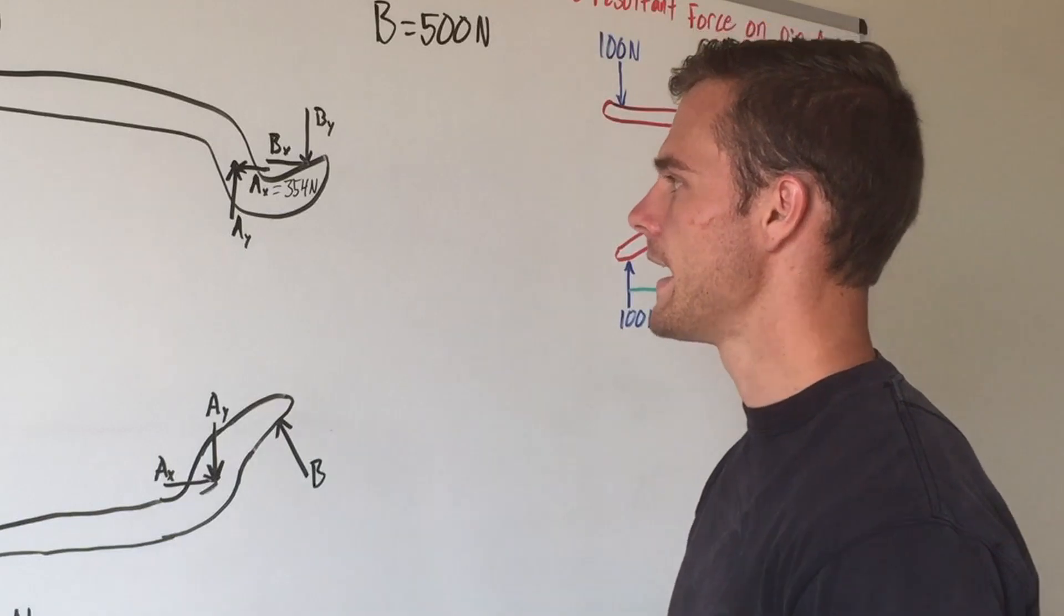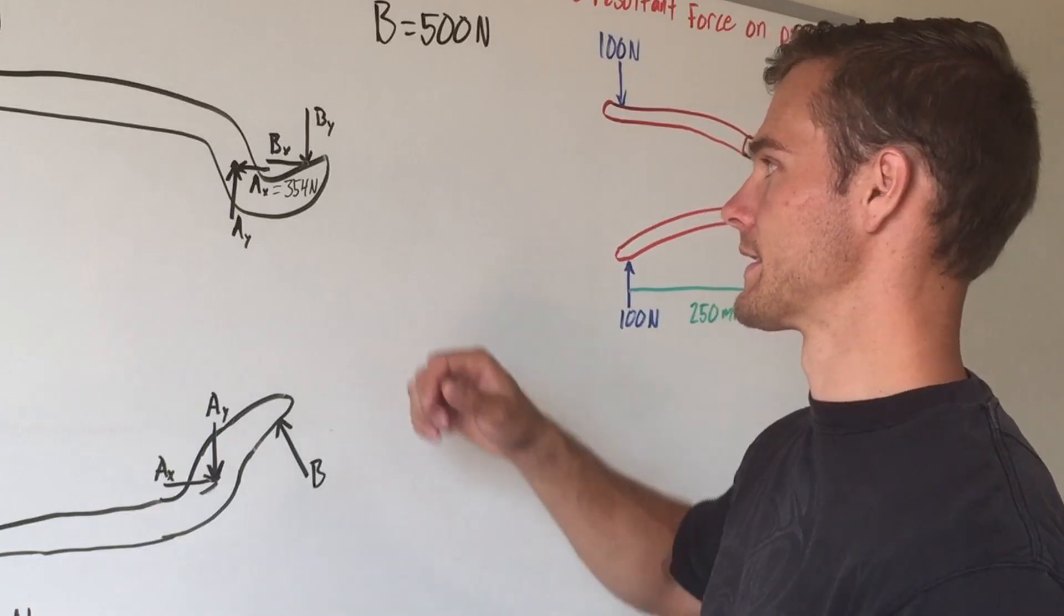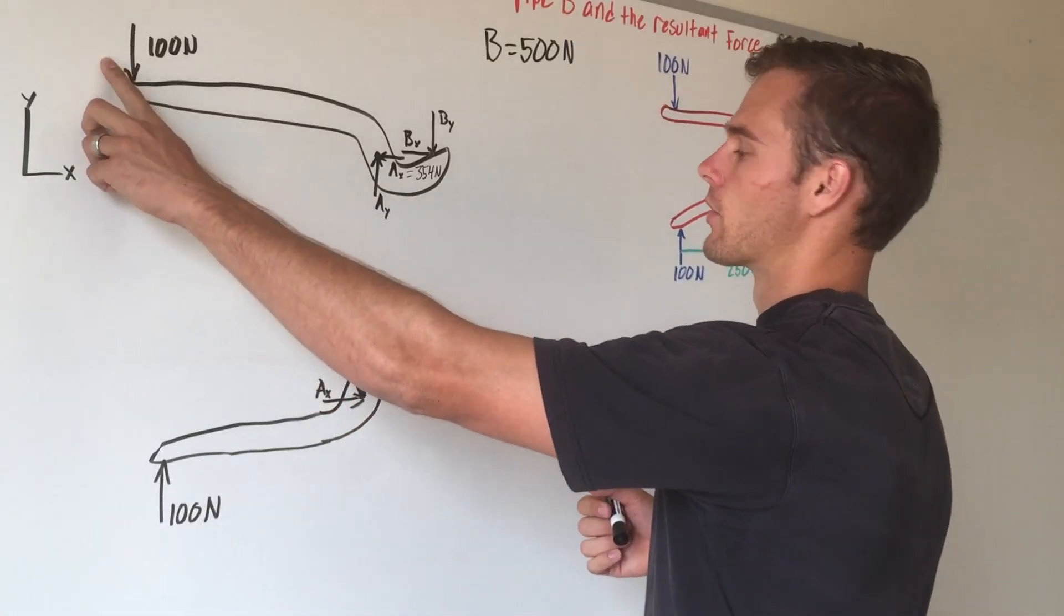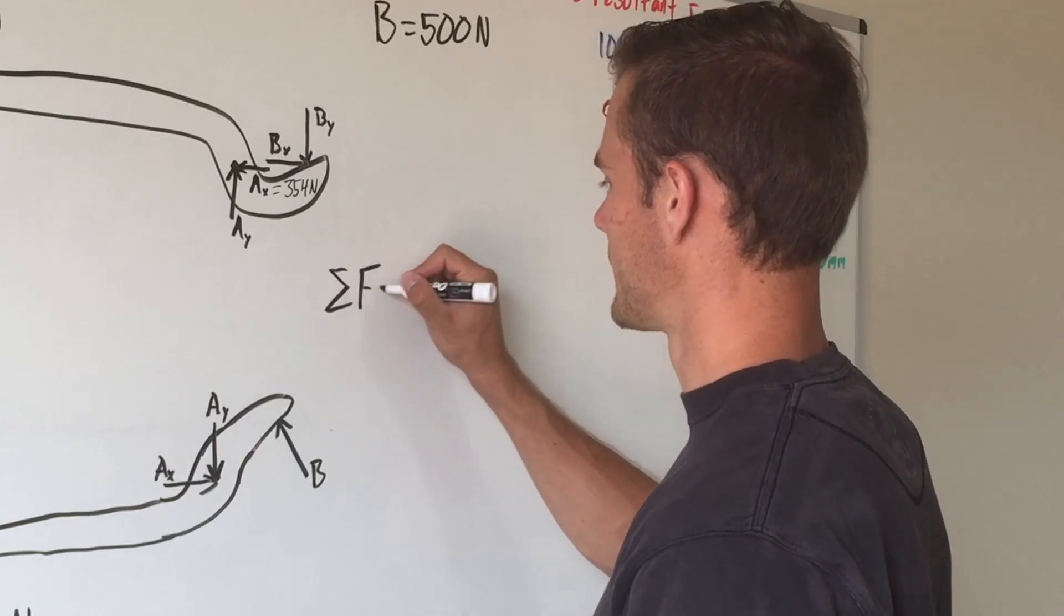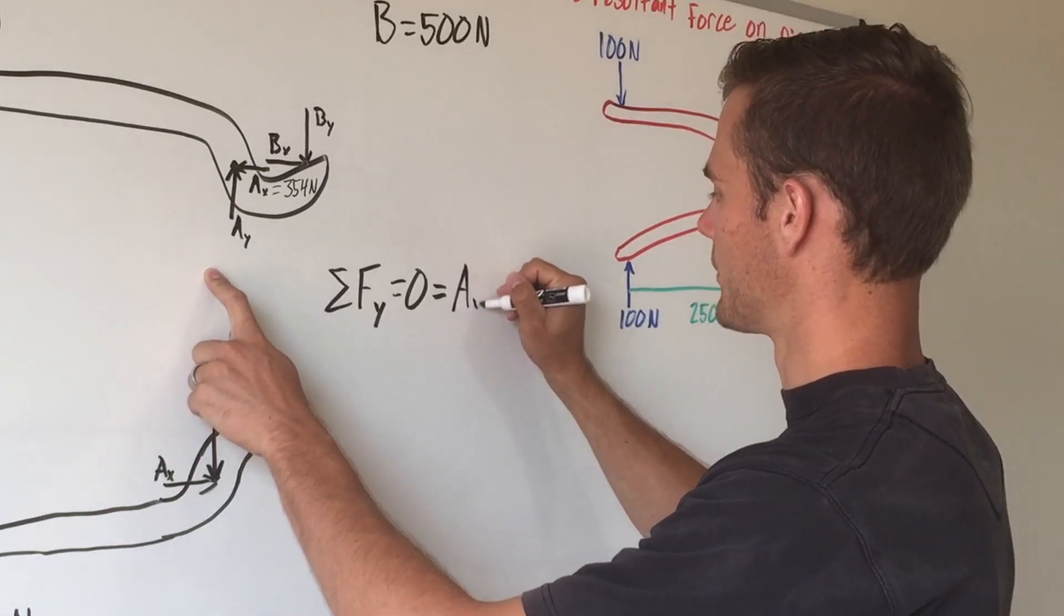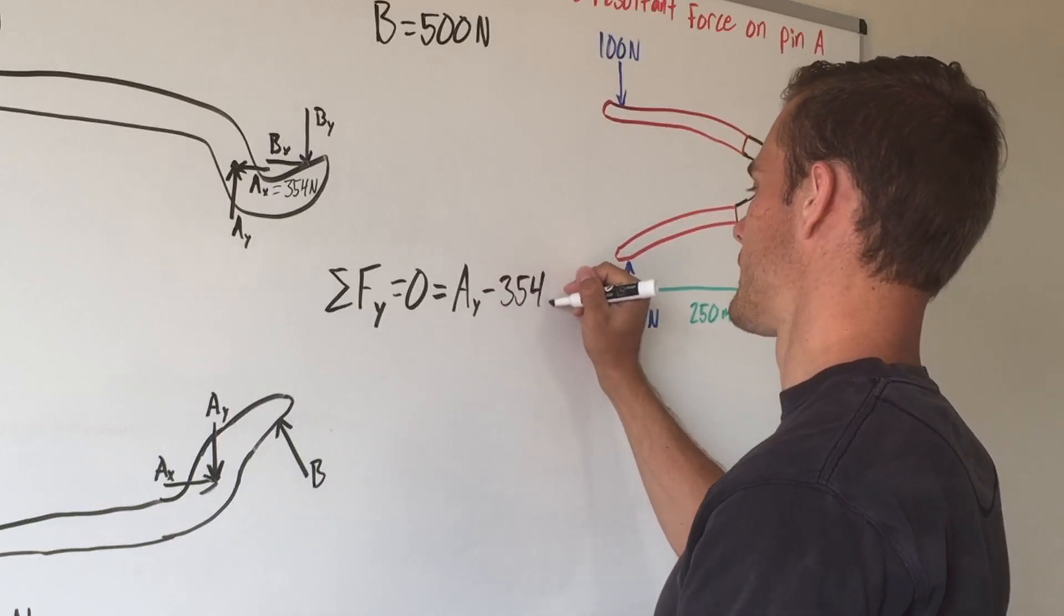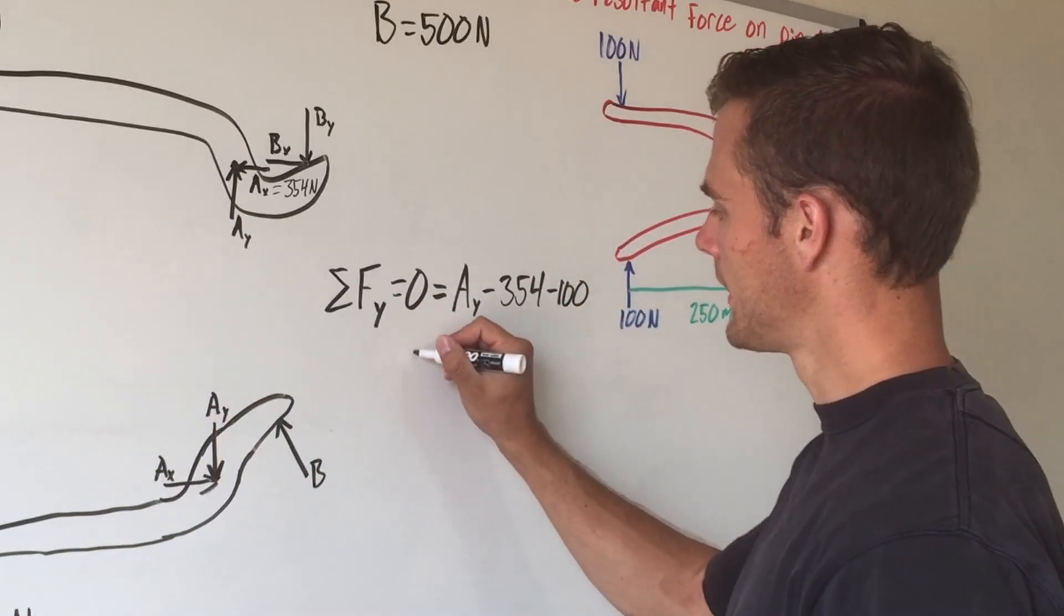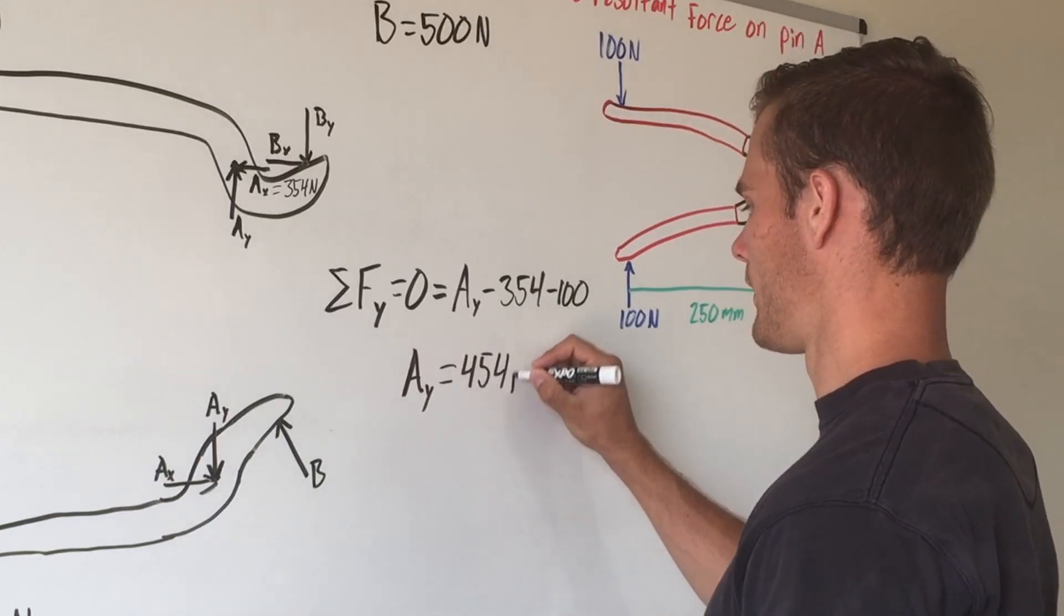And then to find our force A, or A sub y rather, we're going to do the sum of the forces in the y direction, because now we've solved for B sub y and we know that this force is 100 newtons. So that just leaves us with one unknown force. So if we say that the sum of the forces in the y direction equals zero, and you have your A sub y in the positive y direction so it's positive, minus B sub y which we found was 354 newtons, and then minus 100, add these over to the other side, combine them, and we end up getting that A sub y equals 454 newtons.